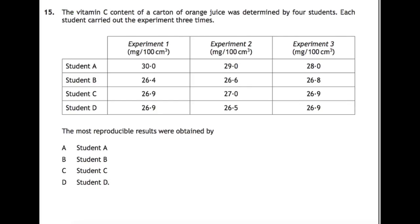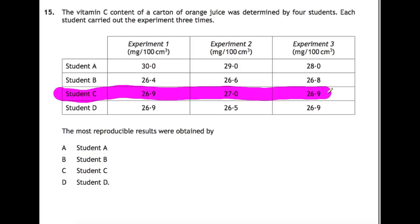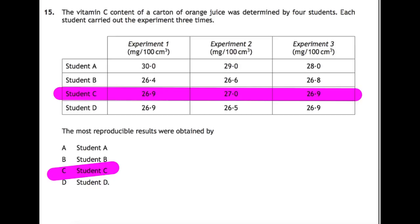The vitamin C content of a carton of orange juice was determined by four students. Each student carried out the experiment three times. The most reproducible results were produced by which student? You're looking for the results closest in value to each other. That would be student C, with values of 26.9, 27.0, and 26.9 — these are the closest. So C is our answer.